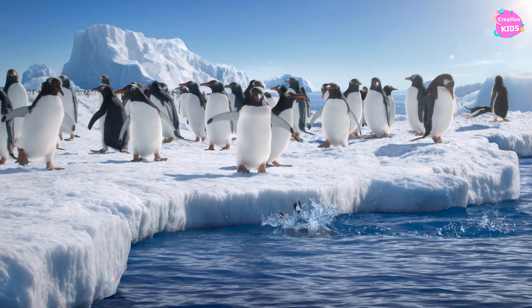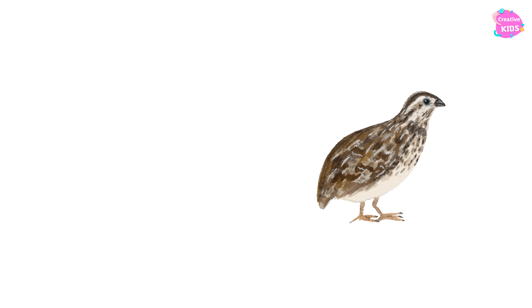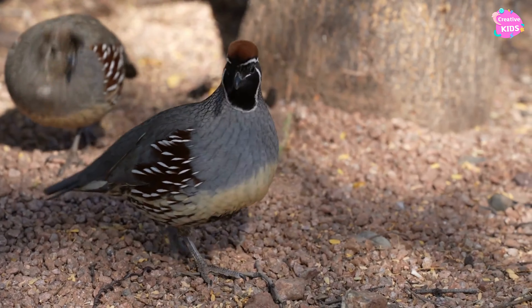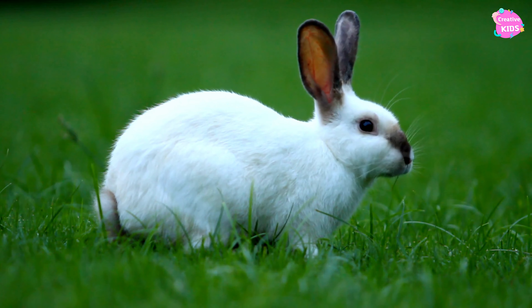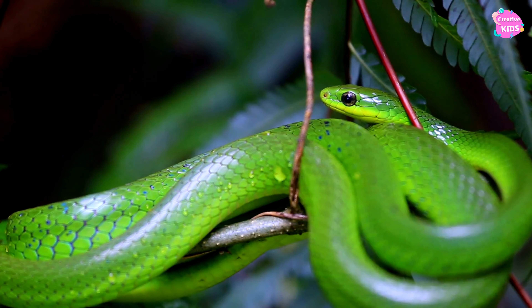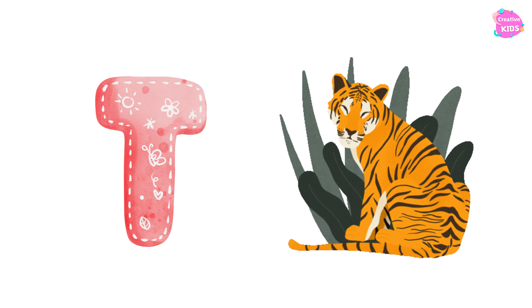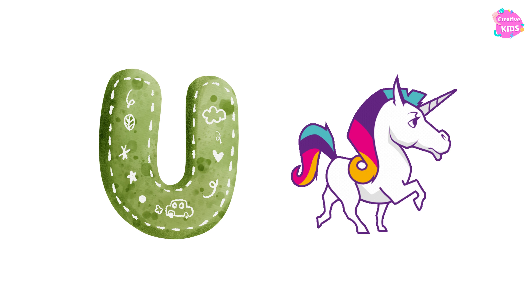P is for Penguin. Q is for Quail, Q is for Quail. R is for Rabbit, R is for Rabbit. S is for Snake, S is for Snake. T is for Tiger, T is for Tiger. U is for Unicorn.